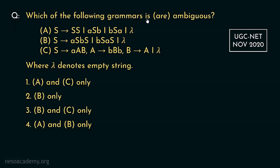Consider this question: which of the following grammars is or are ambiguous? There are three grammars given. A: S can be rewritten as SS, ASB, BSA, or lambda. B: S can be rewritten as ASBS, BSA, or lambda. C: S can be written as small-a, capital-A, capital-B; A can be rewritten as small-b, capital-B, small-b.